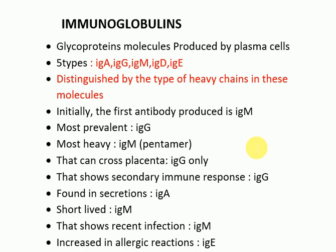Hello students, we are going to discuss immunoglobulins and their types today. Immunoglobulins are glycoprotein molecules produced by plasma cells. Plasma cells are actually B lymphocytes — when they leave the bone marrow and enter the tissues, they come across an antigen and are activated by helper T cells and differentiated into plasma cells.